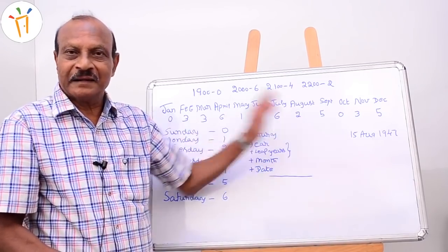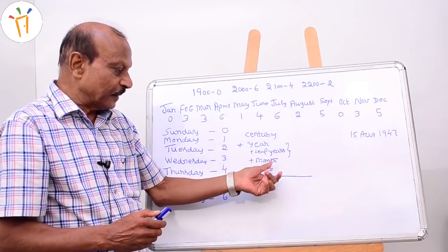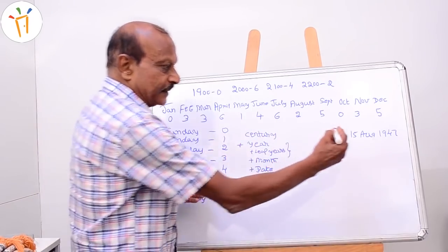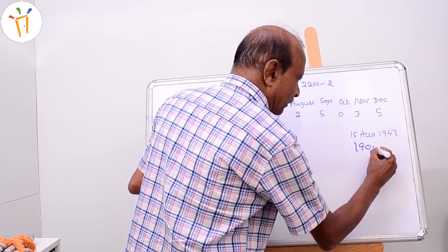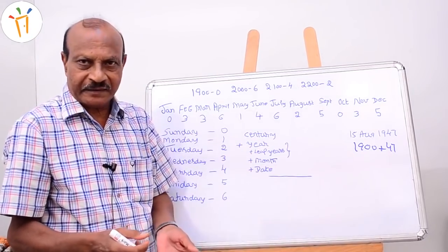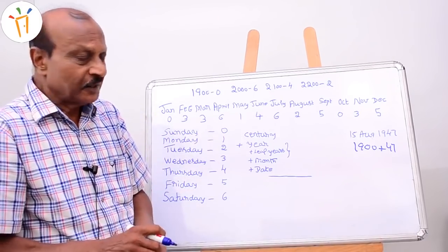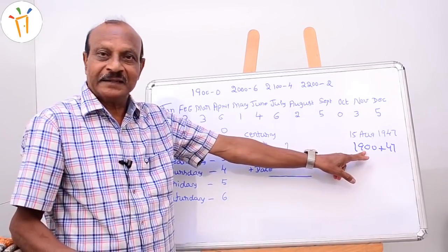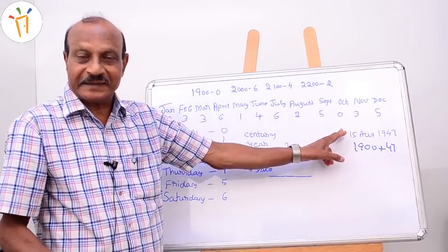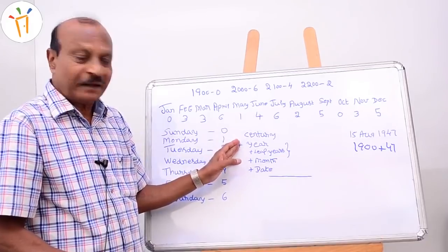How to find this from the formula? I have written here: Century + Year + Number of Leap Years + Month + Date. For 15th August 1947, write 1947 as 1900 plus 47. We can write it as 1900 plus 47 — no difference. This 1900 represents the century, 47 represents the year, August represents the month, and 15th represents the date. That is the formula: Century + Year + Month + Date.